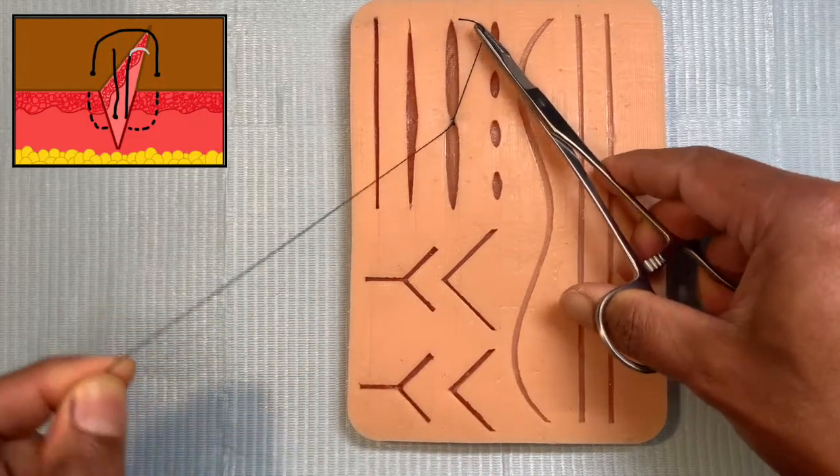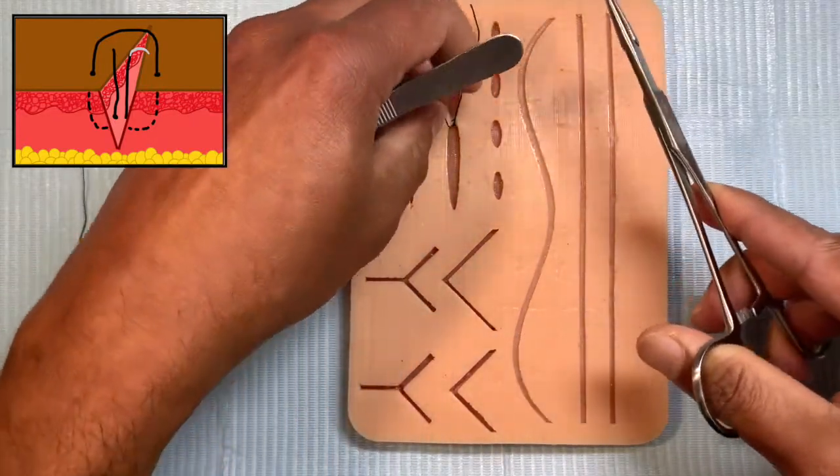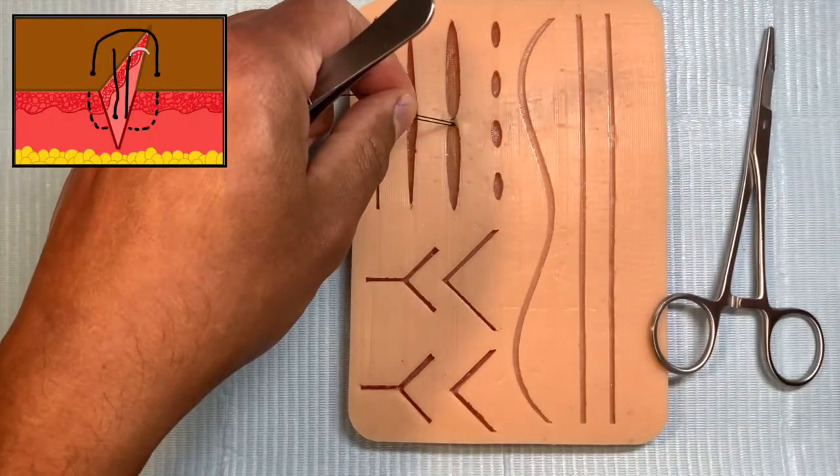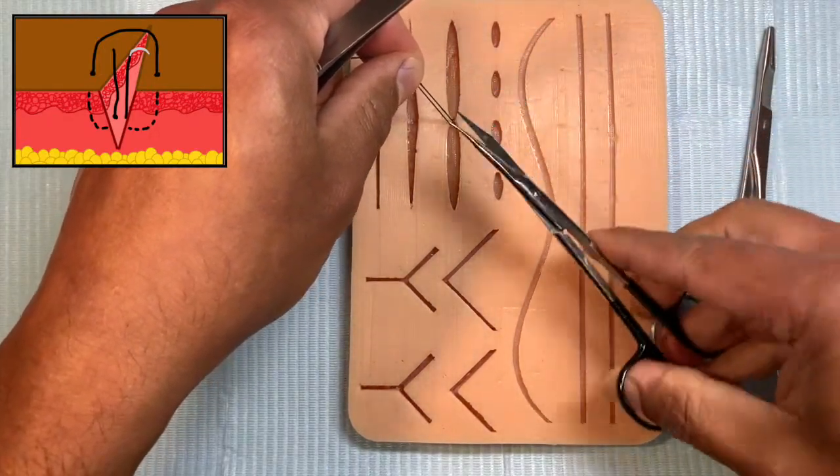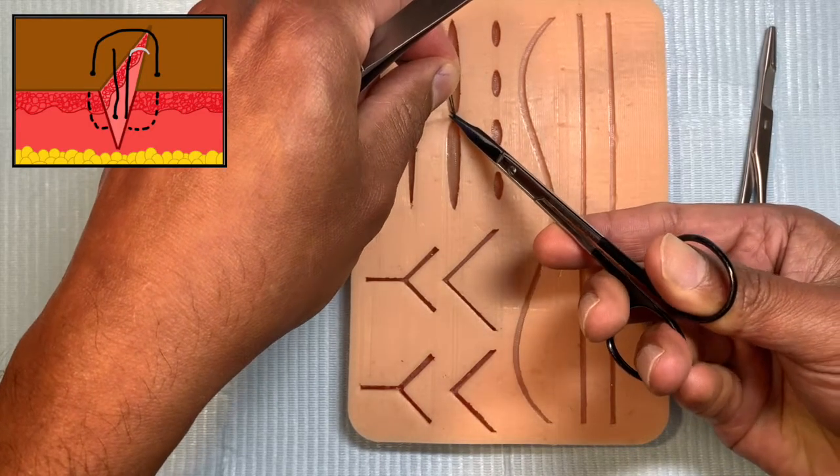So the result of all this is that you've got a knot which is sitting in the depth of the wound and not lying to the surface. And then you're going to cut this really short just above the knot and use a sharp pair of fine scissors like these scissors is good.